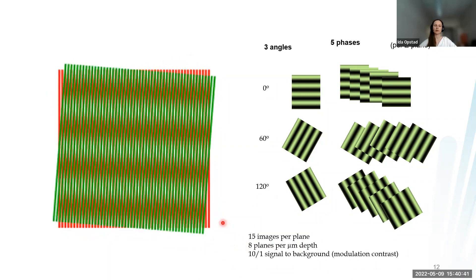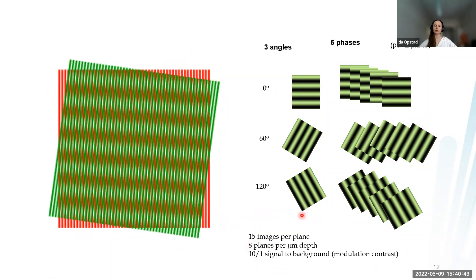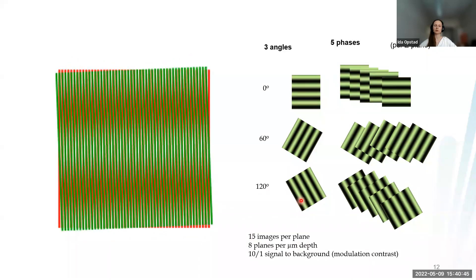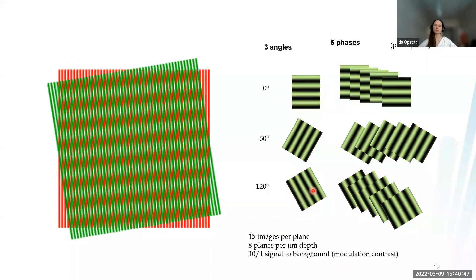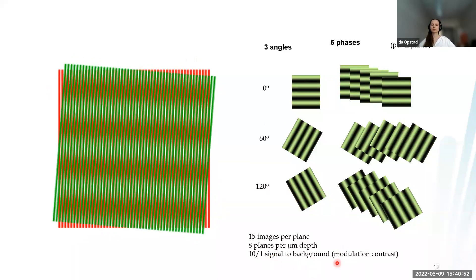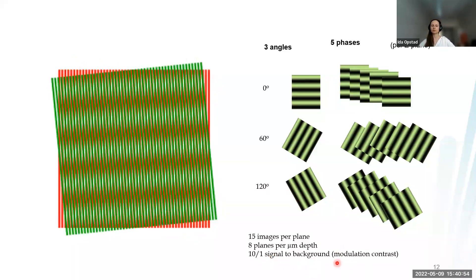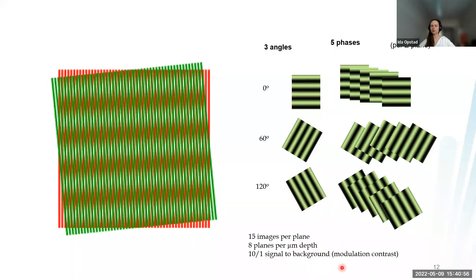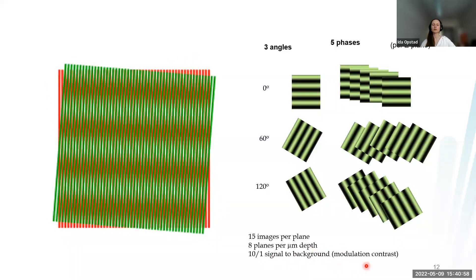For the algorithm to work, there needs to be good contrast of these stripes. They need to be bright enough. We need 10 to 1 signal background ratio approximately and good modulation contrast.